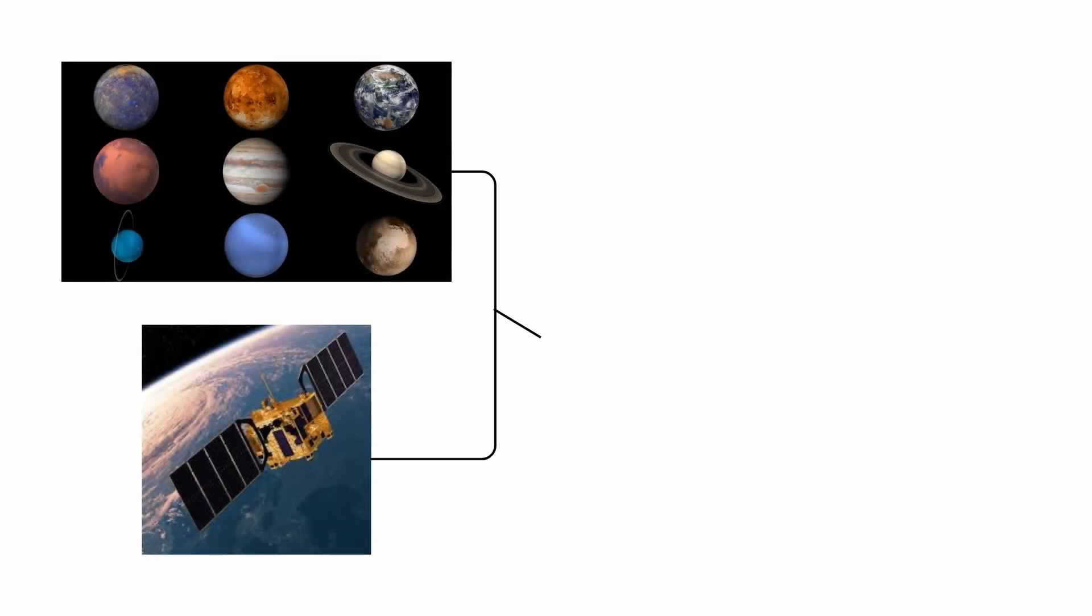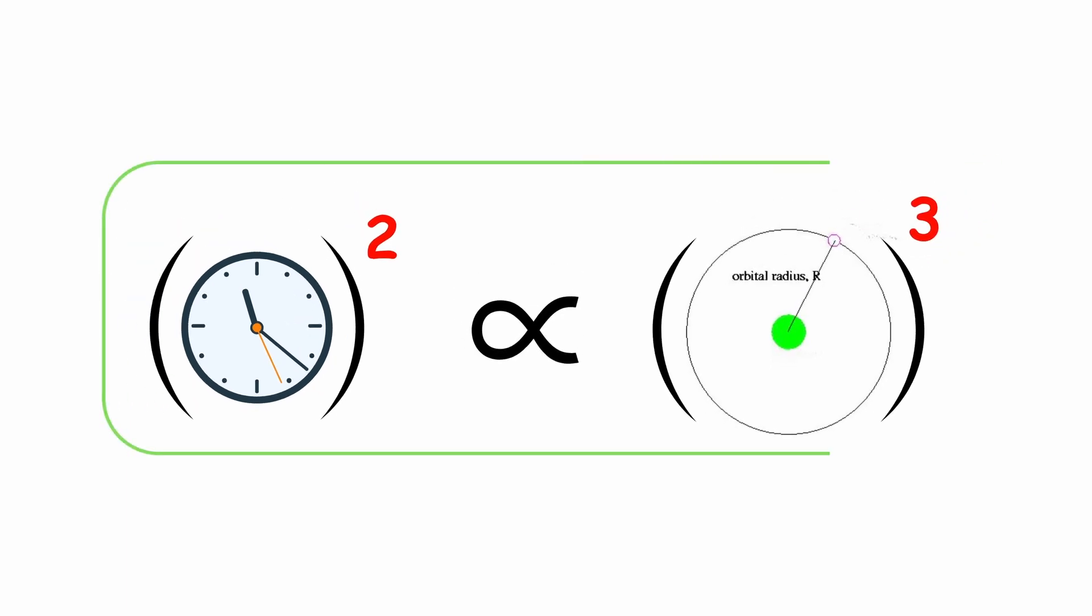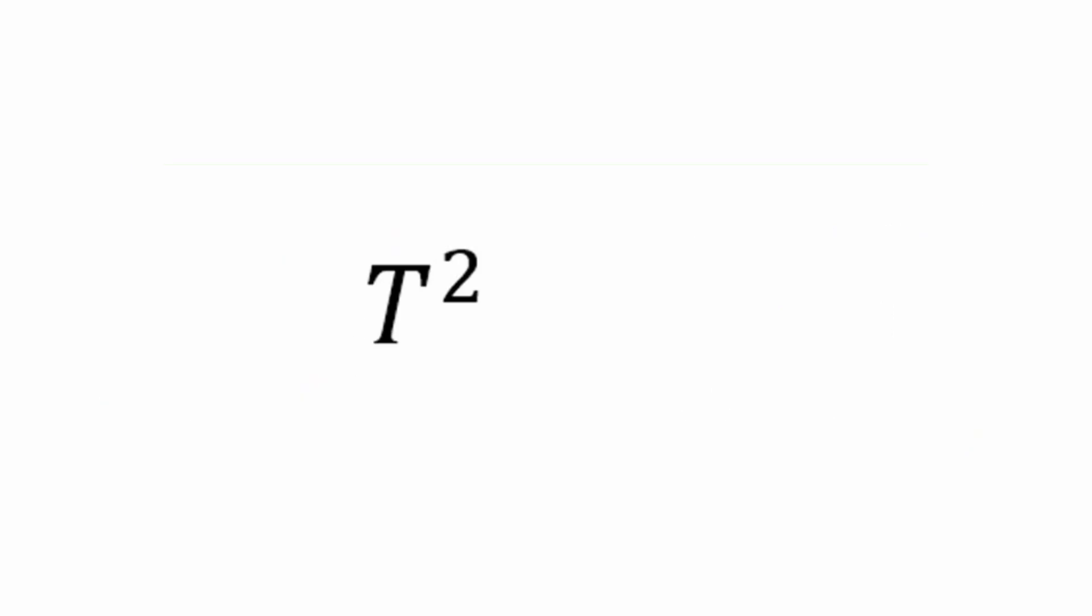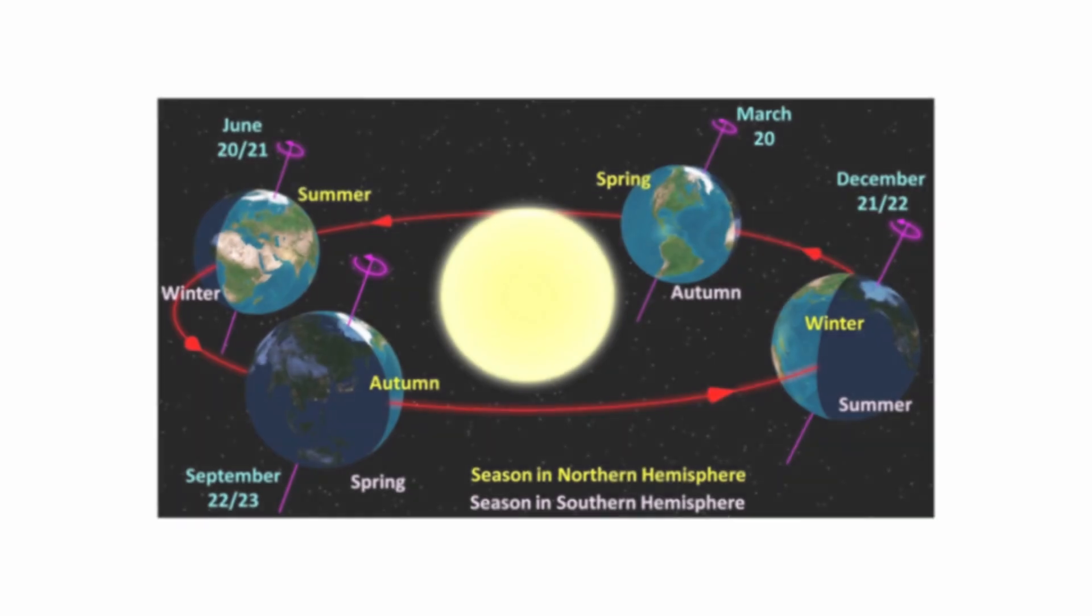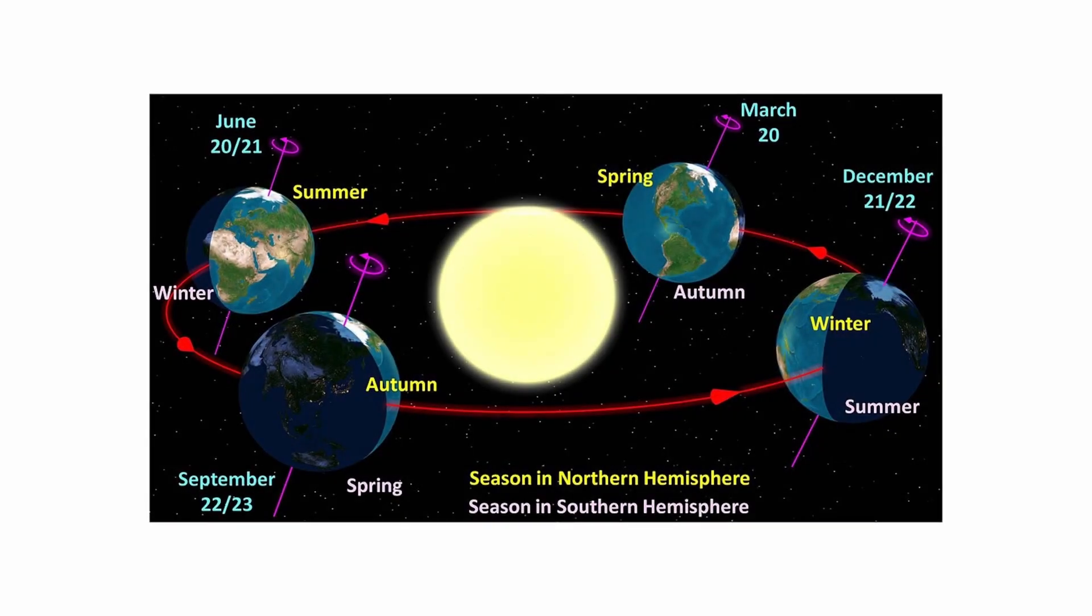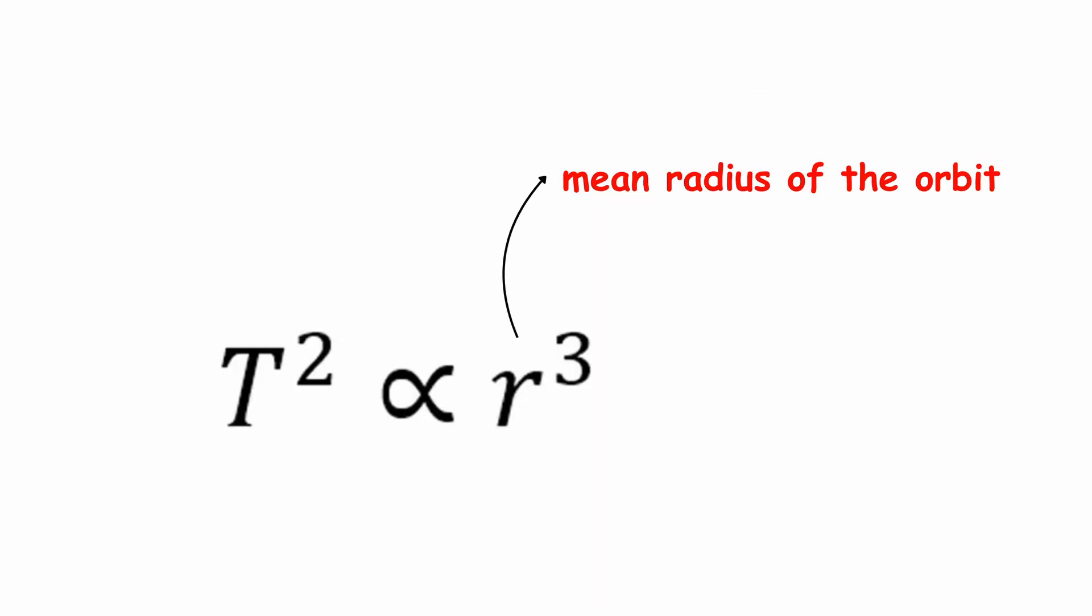Kepler's third law states: for planets or satellites in a circular orbit about the same central body, the square of the time period is proportional to the cube of the radius of the orbit. The equation summarizing this law is: t-squared is proportional to r-cubed, where t is the orbital period, i.e., the time it takes for a planet to go around the Sun, and r is the mean radius of the orbit.